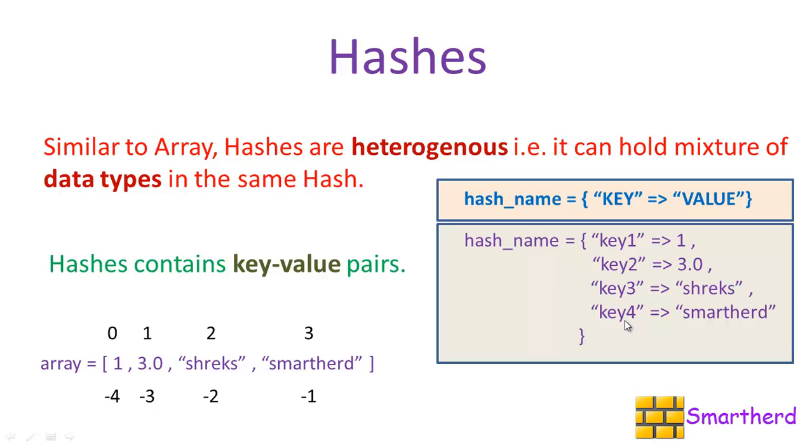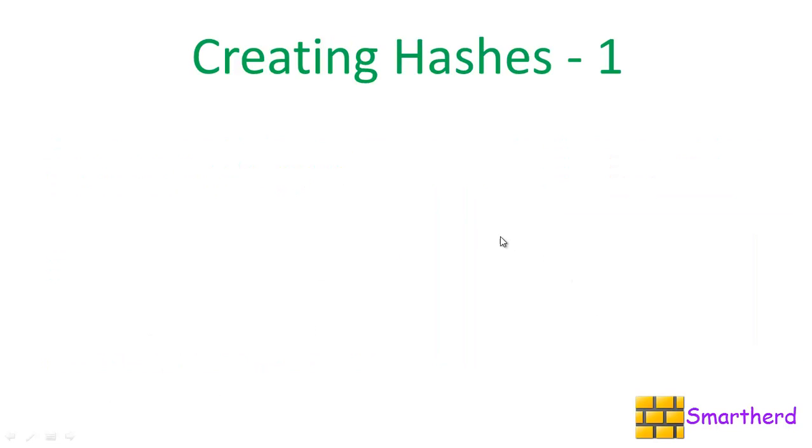How to create a hash? Let's see our first method. This fruit is the hash variable equal to within the curly braces, we have to define our hash contents. That is key and the value, key and the value. Red is the key and its value is apple. Yellow is the key and banana is the value. Green is the key and guava is the value.